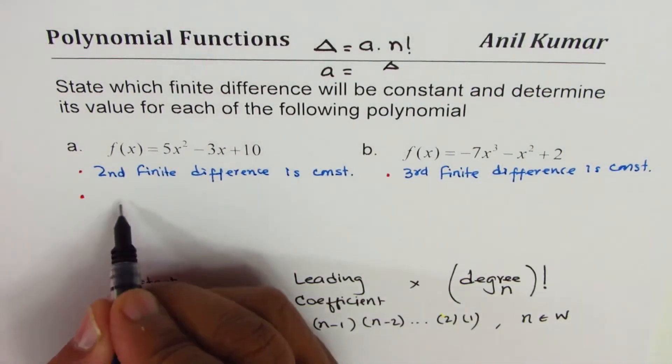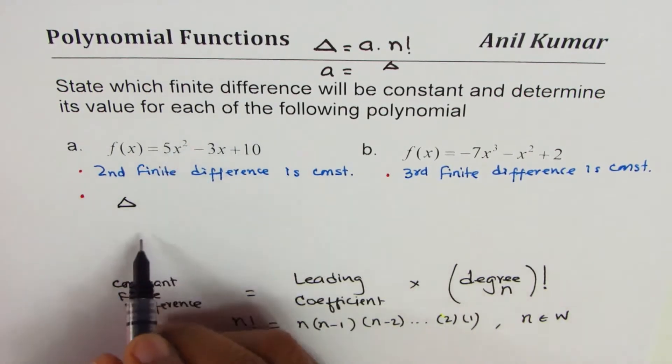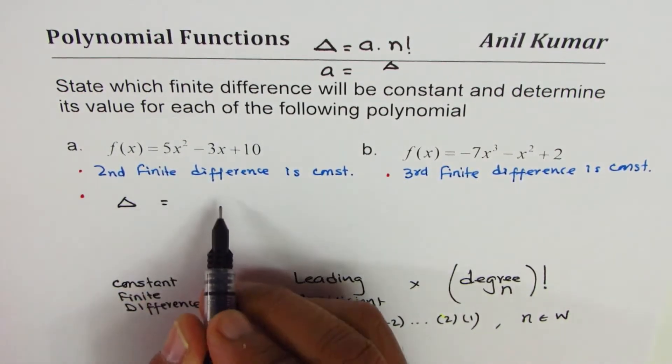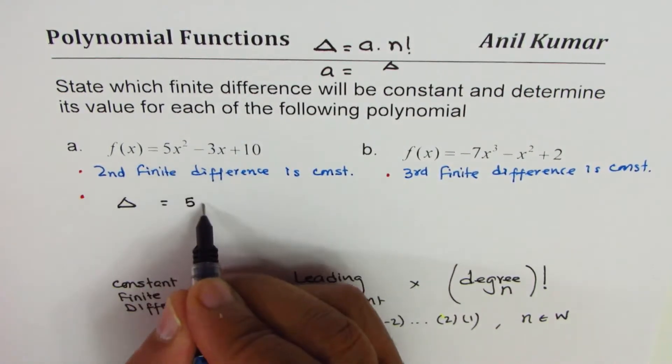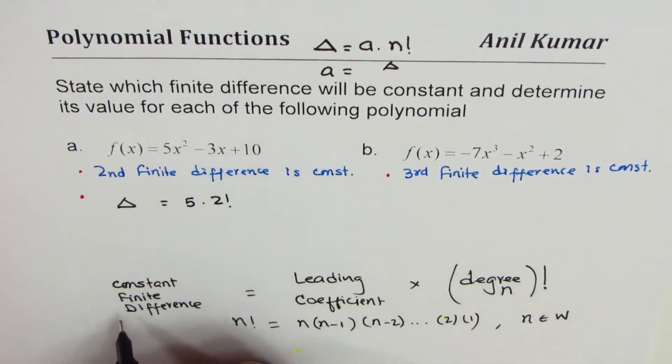So the finite difference delta, which in this case is the second finite difference, equals leading coefficient is 5 times degree factorial, which is 2 factorial.